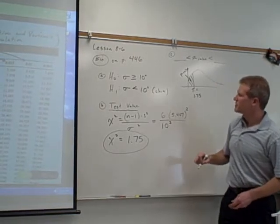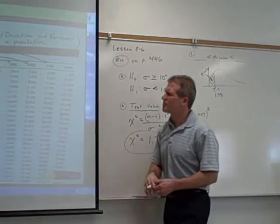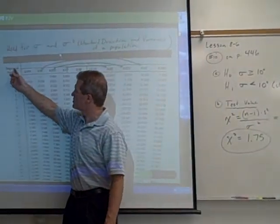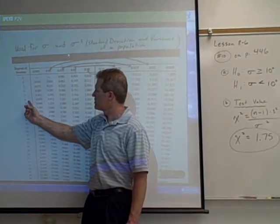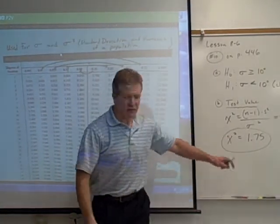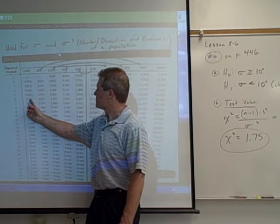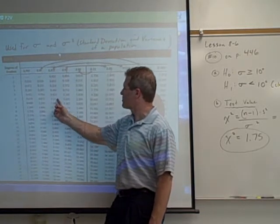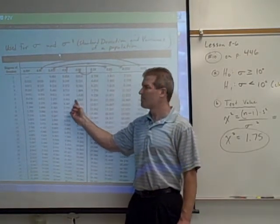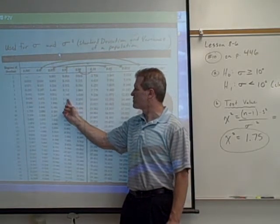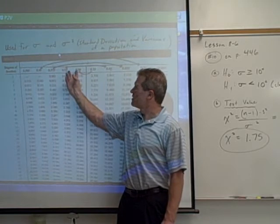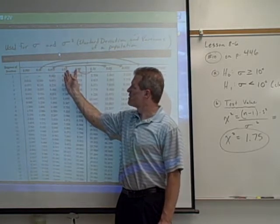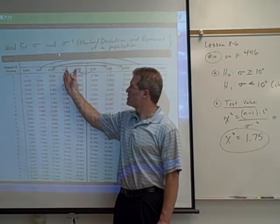If my sample size was 7, my degrees of freedom would be 7 minus 1, which would be 6. And I'm going to come across here looking for my test value at 1.75. 1.75, I'm looking for it. It's going to fall right in there. So my test value falls between these values.